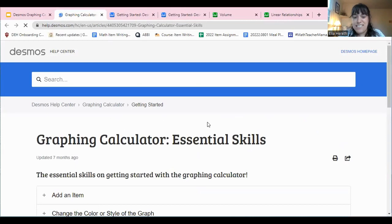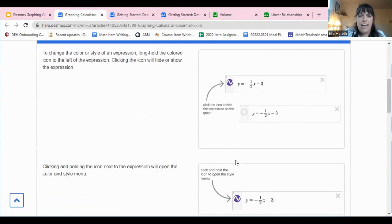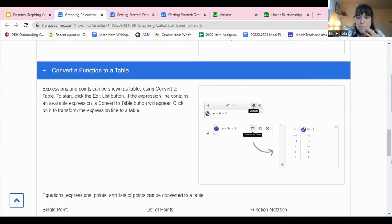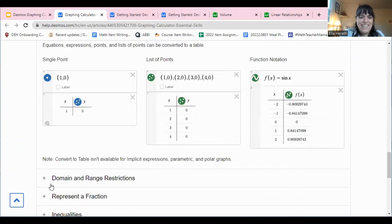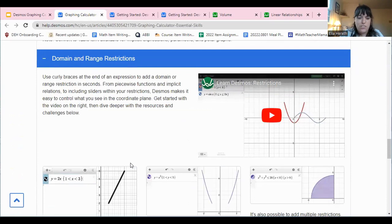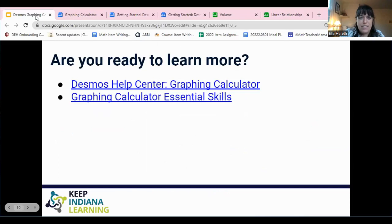And then the other one is as you're building your essential skills on a graph, consider going through these little links to think about how can I change the color? How can I convert a function to a table? We did that in this PD. How can I add domain and range restrictions? So all these little things that you might want to adjust, you can find in just bite-size chunks with these resources right here.